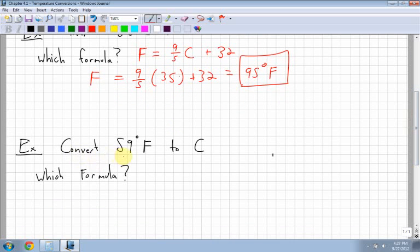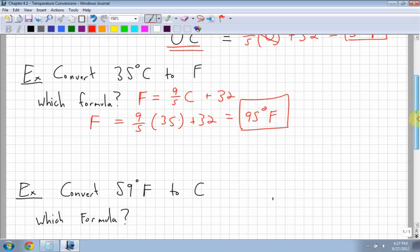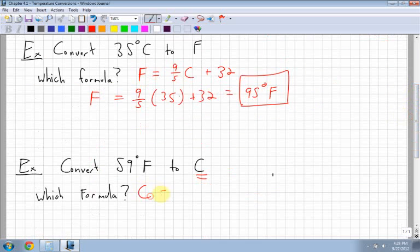Next thing I'm going to do is convert 59 degrees Fahrenheit to Celsius. So 59 degrees, which formula am I going to use? I'm converting to Celsius. So I want to figure out what my Celsius is. That means I'm going to use the first formula, the five-ninths Fahrenheit minus 32. So I have Celsius is equal to five-ninths Fahrenheit minus 32.